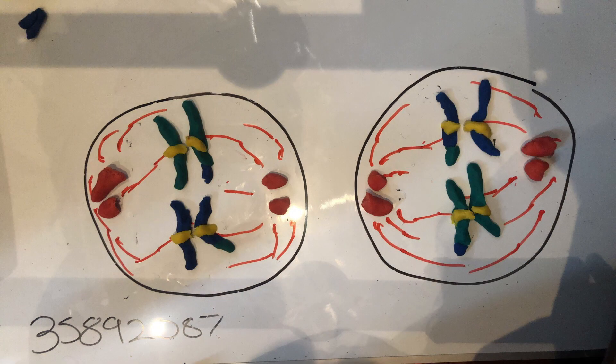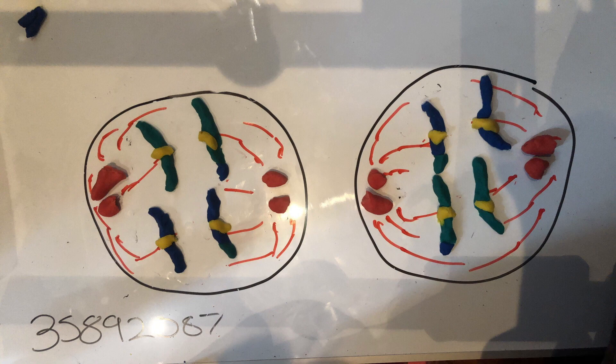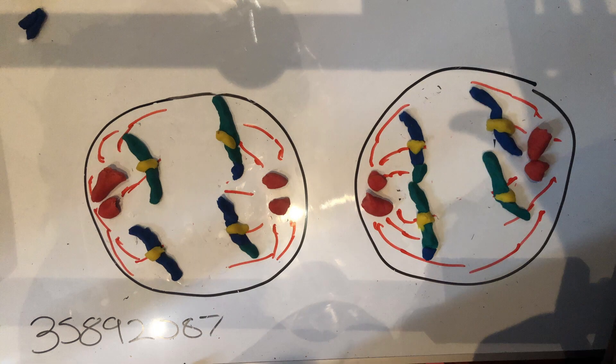Once this has been completed, anaphase 2 begins. Anaphase 2 is the same as anaphase 1, where the spindle fibers pull the sister chromatids apart and pull the respective chromosomes to opposite poles of each daughter cell. Once each chromosome has been pulled to either pole of the daughter cell, telophase 2 can begin.